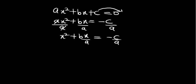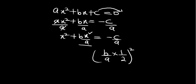The next thing we are going to do: the coefficient of x here is b over a. We are going to multiply this coefficient of x by 1 over 2, then we will square our answer. So we multiply the coefficient of x, which is b over a, by 1 over 2, then square the answer.